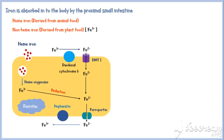This diagram illustrates the intestinal absorption of both heme iron and non-heme iron. Heme iron enters the cell as an intact metalloporphyrin, presumably by a vesicular mechanism, as indicated by number 1 in the diagram.